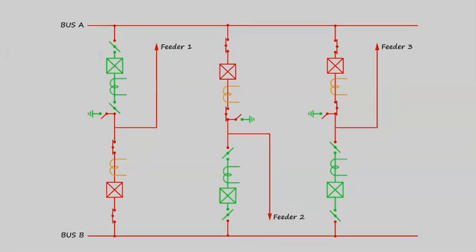But this arrangement is not economically feasible for low voltage systems. Only we use this type of arrangement in ultra high voltage systems like 400 kilovolts and above because this is much expensive. Because here each feeder will have two circuit breakers so it will increase the cost.